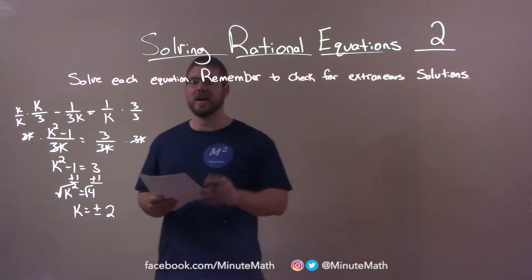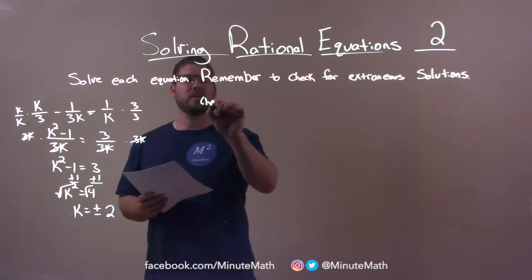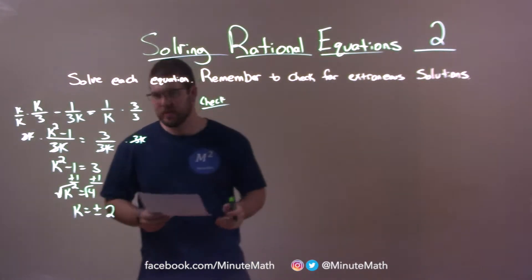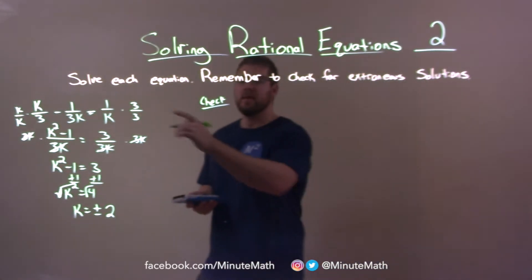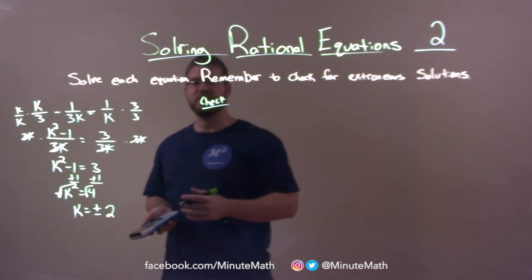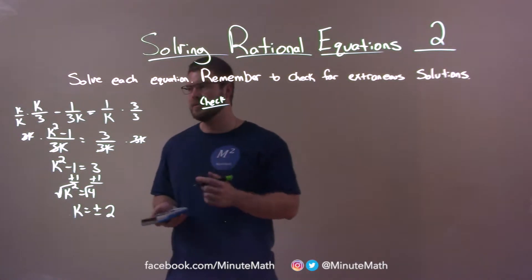So, let's go check that. They told us we need to check for extraneous solutions. So, take our original equation and plug 2 or negative 2 in. Let's go 2 first.